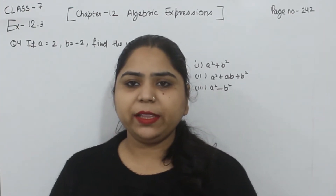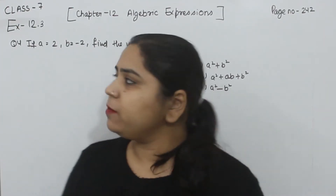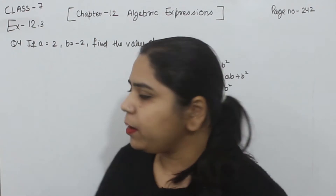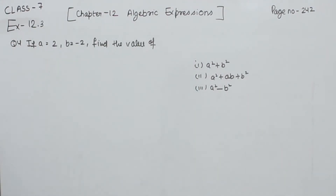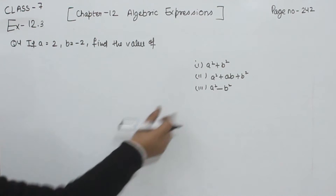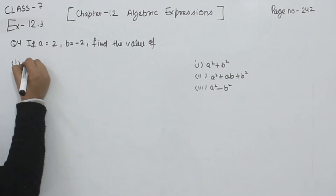Hello everyone, this is Preeti. We are here with another question of Exercise 12.3, page number 242, question number 4. If A is equal to 2 and B is equal to minus 2, find the value of the following. We are having 3 parts, starting with the first one.